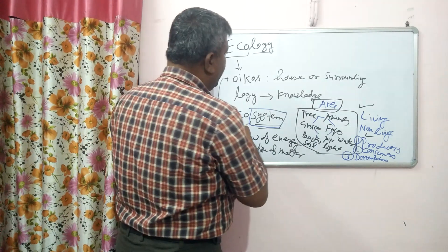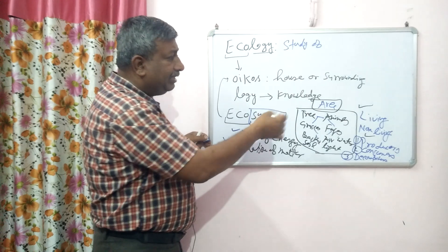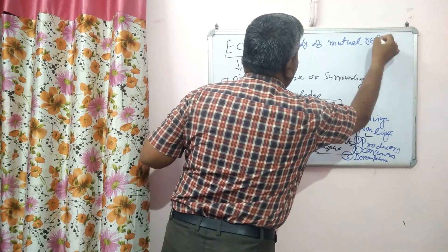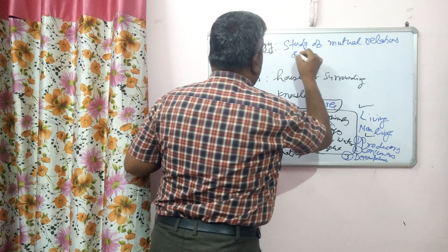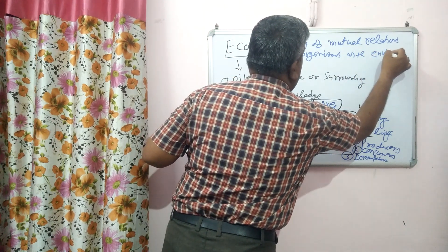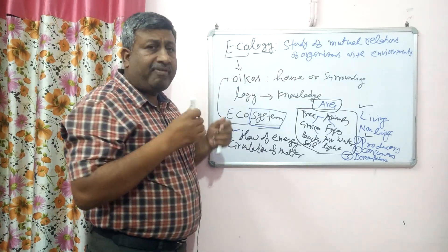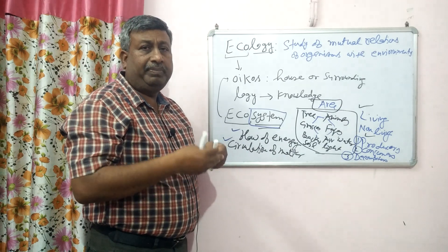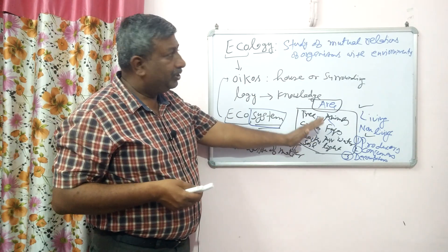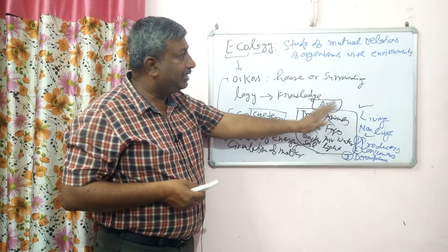And in case of ecology, ecology is the knowledge or the study — study of these interactions, these interrelated processes, and study of mutual relation of organism with environment. How the organism — means animal, tree, grasses — interact with each other and with the environment, with the physical environment — how they interact with the soil, with the water available, how they interact with the solar radiation. So what is present — that is studied under ecology.